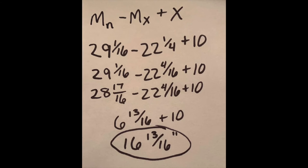You always want common denominators when you're adding or subtracting fractions, so we're going to change 1 quarter into 4/16ths. Then we need to change 29 and 1/16th into an improper fraction, so we change it to 28 and 17/16ths minus 22 and 4/16ths plus 10. Follow the order of operations. We always add and subtract left to right, so we end up with 6 and 13/16ths plus 10, 16 and 13/16ths inches.